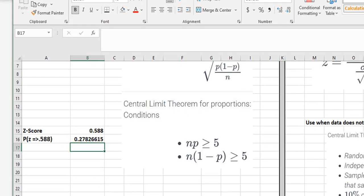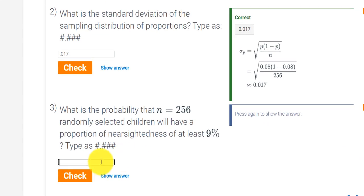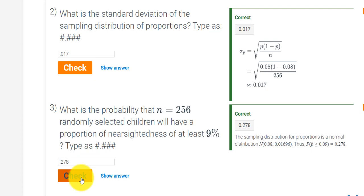And then press enter, I get 0.278. 0.278, so we go back to the problem, and I put in 0.278. And I think that should do it, check answer, and we get correct.